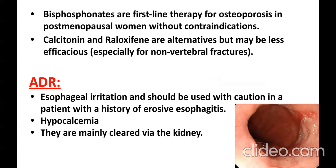Bisphosphonates are the first-line therapy and drug of choice for osteoporosis in postmenopausal women without any contraindication. Calcitonin and raloxifene are alternatives, but they are less efficacious. Adverse drug reactions include esophageal irritation, and bisphosphonates should be used with caution in patients with a history of erosive esophagitis. Hypocalcemia can also develop due to reduced bone resorption and lower blood calcium levels. Bisphosphonates are mainly cleared via the kidneys.